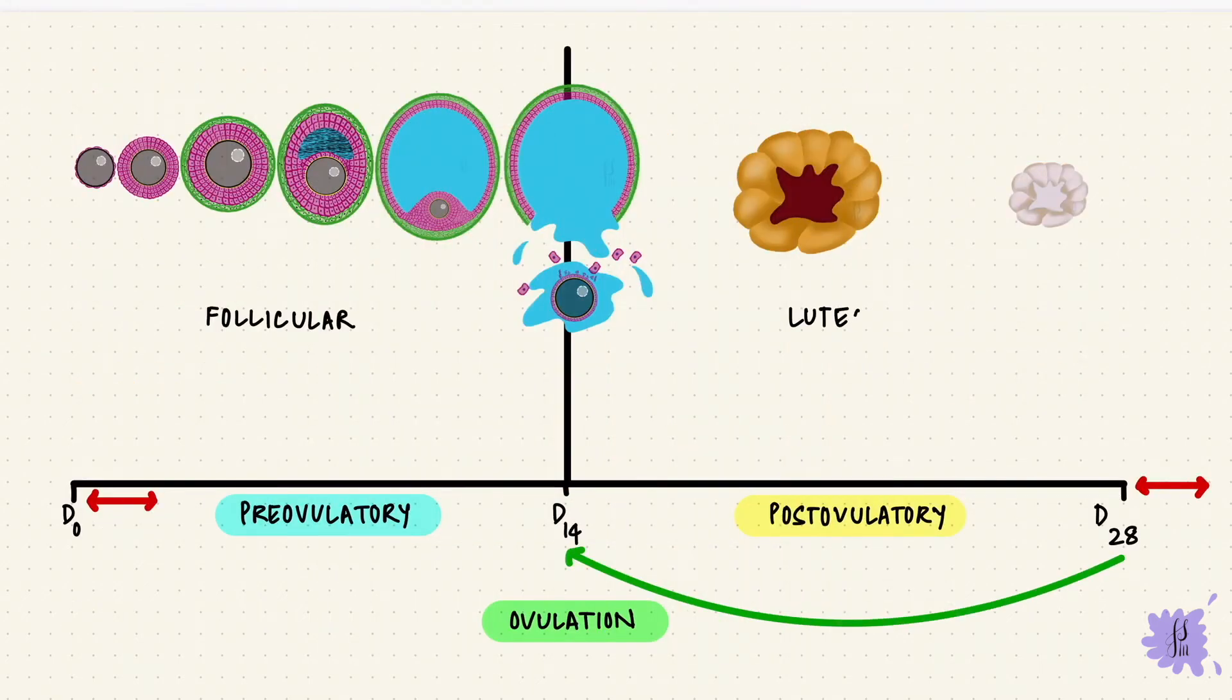During the ovarian cycle, we saw that there was a follicular phase and a luteal phase. For corresponding changes that happen in the endometrium, the follicular phase would be the proliferative phase, and the luteal phase would be the secretory phase.